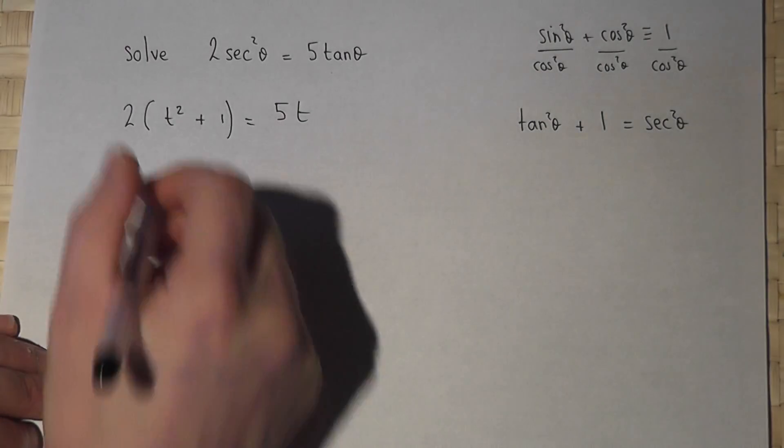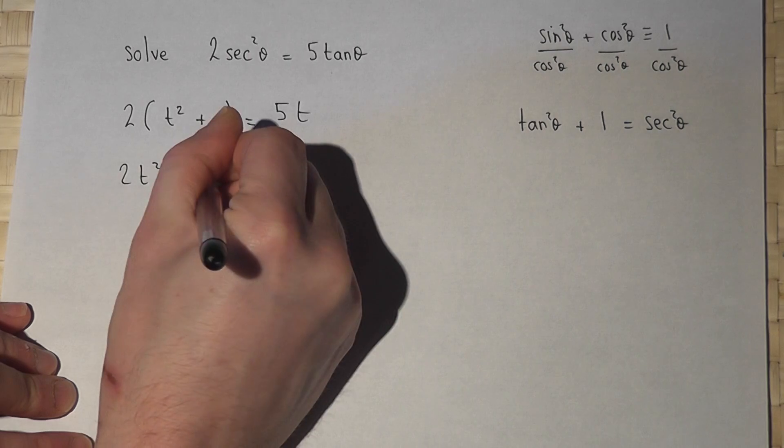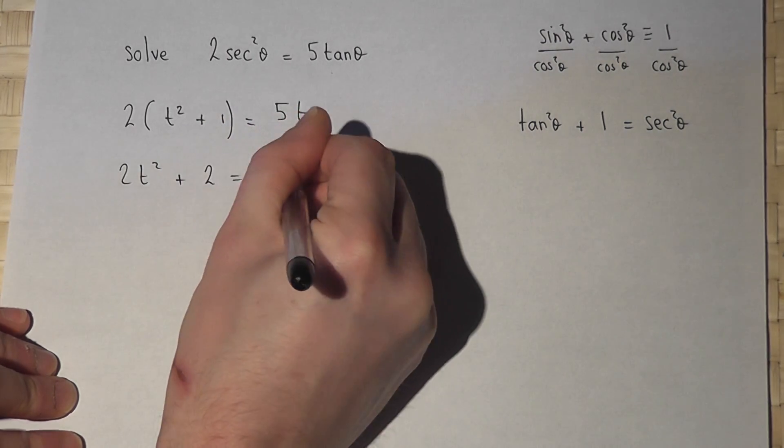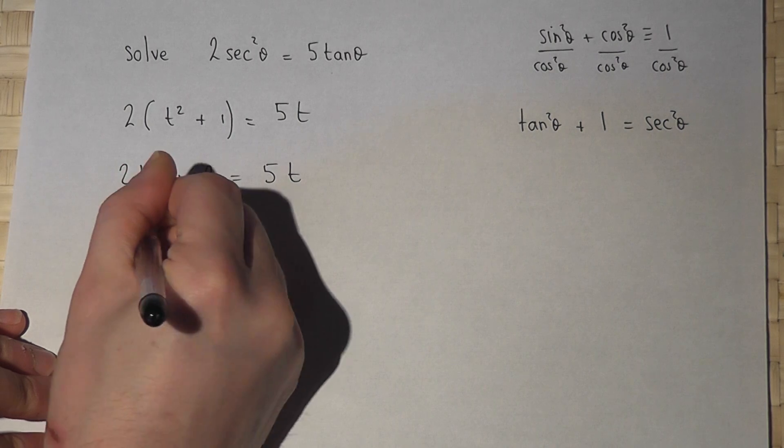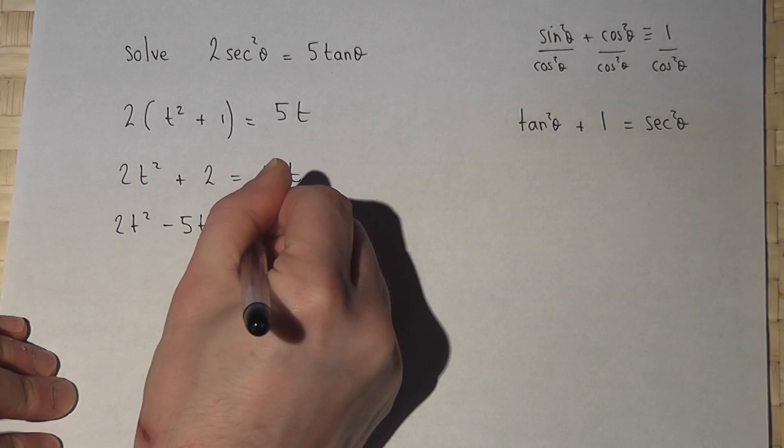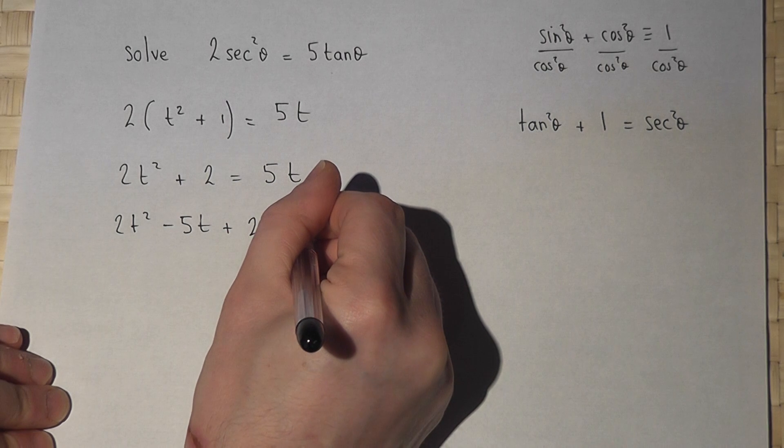If I expand this, I get 2t squared plus 2 equals 5t. If I now take away 5t, 2t squared minus 5t plus 2 equals 0.